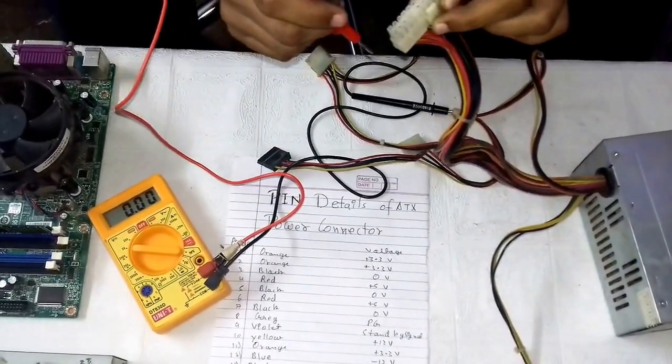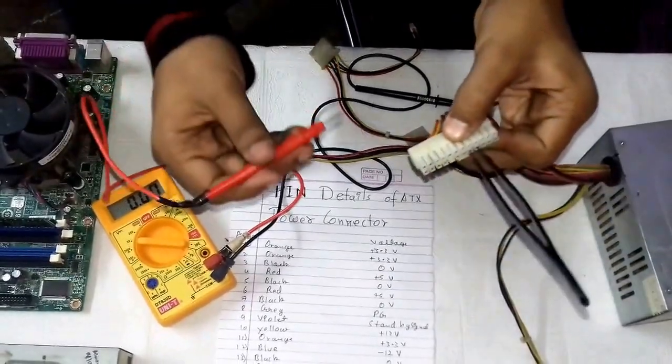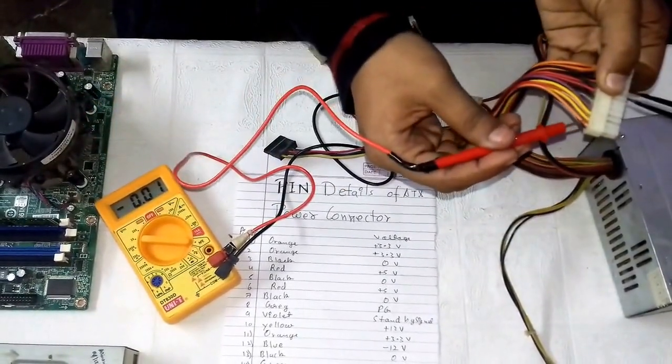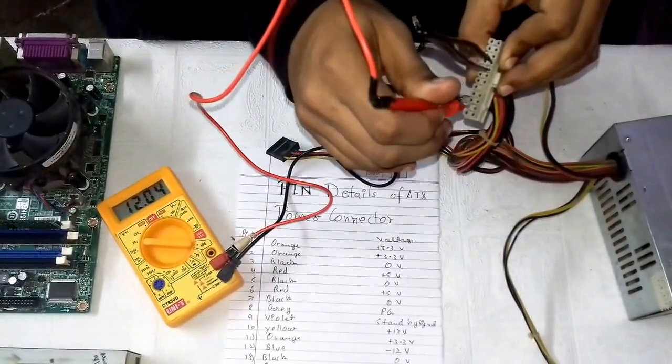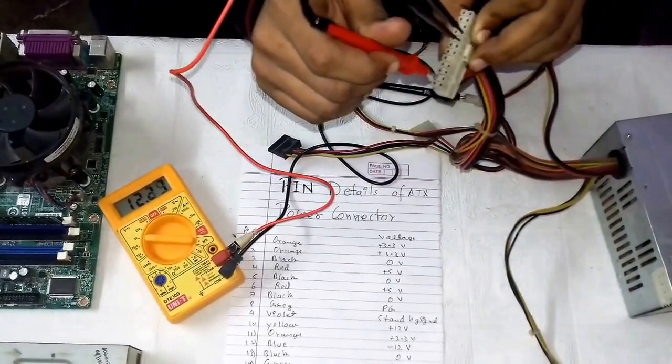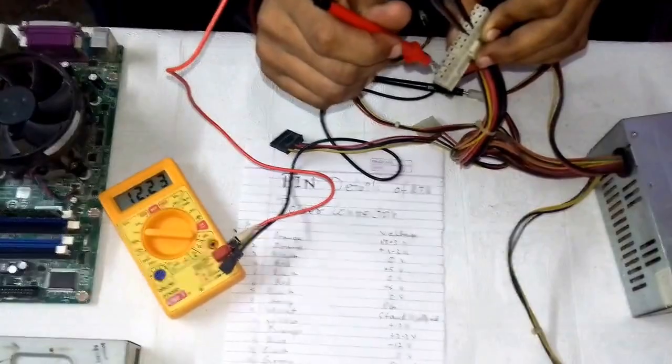Now let us check the voltage in yellow wire. Yellow wire is this side, let us check the second one. Insert the probe. It is showing 12.2. Yeah, it is in the acceptable range.